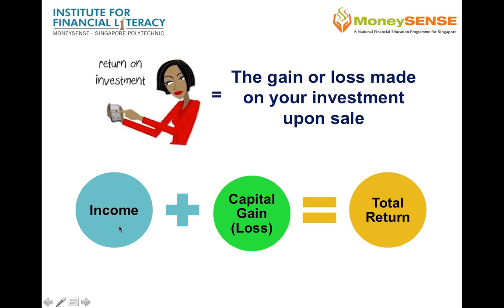The first component is income, which is the interest or dividend payment in cash. When expressed as a percentage of the purchase price, it is known as the yield. Examples of income include interest you earn from a bank deposit, the coupon you receive from a bond, or the dividend payment from shares or unit trusts you hold. The second component is capital gain or loss, if you sell an asset at a higher or lower price than the price you originally paid.